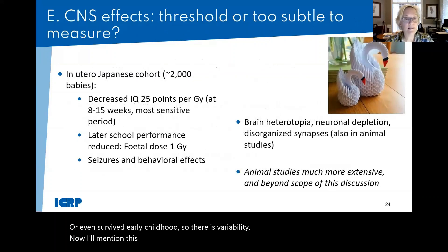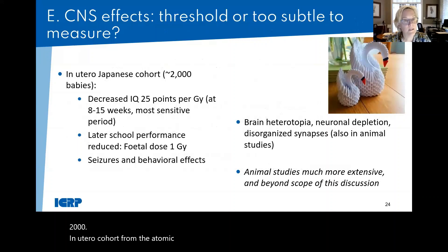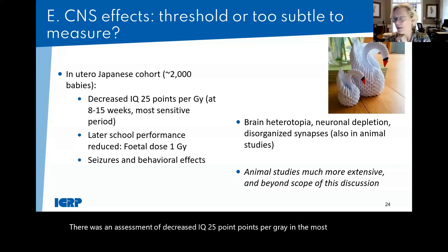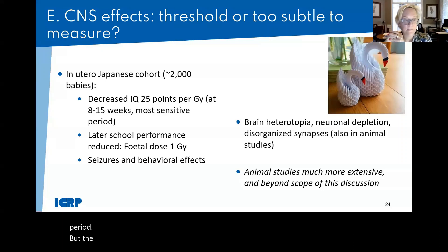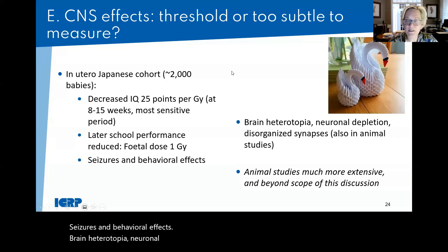Regarding CNS effects: of around 2,000 in utero cohort from atomic bomb survivors, there was an assessment of decreased IQ — 25 points per gray in the most radiosensitive period. Late school performance was also reduced. Effects included seizures, behavioral effects, brain heterotopia, neuronal depletion, and disorganized synapses. Many more studies exist in animals.